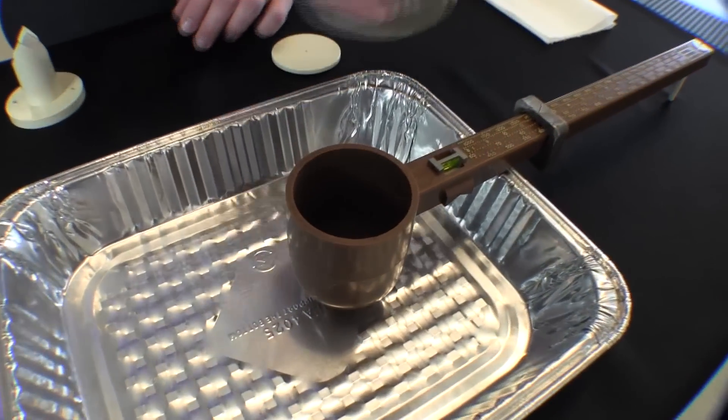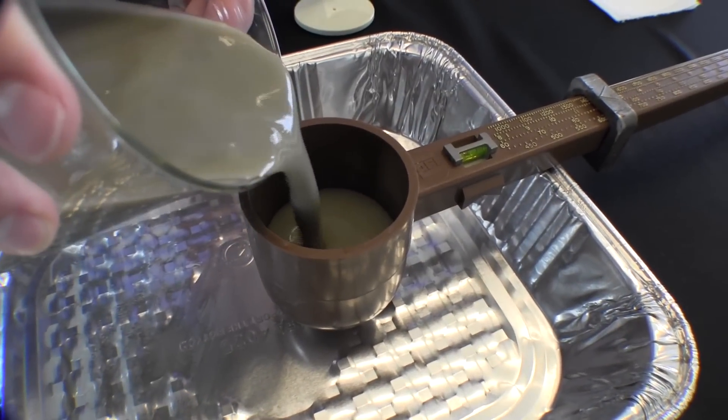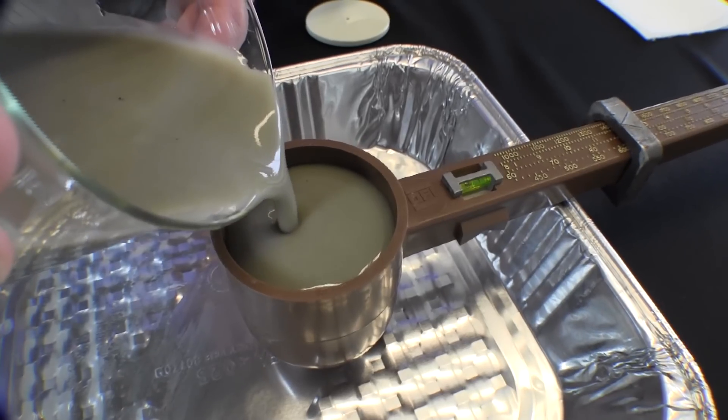Step one in the density test is to fill the cup of the mud balance full of your bentonite drilling fluid. It is important to fill it all the way to the top.